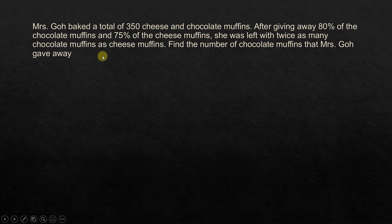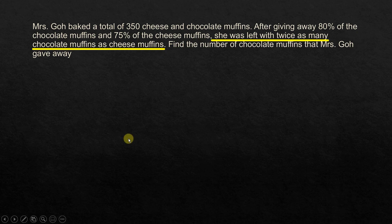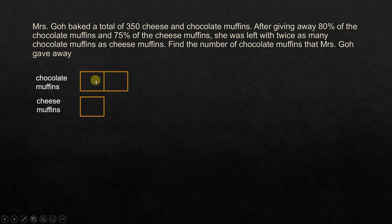She was left with twice as many chocolate muffins as cheese muffins. Whenever we have a 'more than' or 'less than twice' relationship, the quantity that comes after will be our reference. So let's start with cheese muffins. Let's assume that one unit is the amount of cheese muffins left. In that case, chocolate muffins would have two units, because that is twice as many as the cheese muffins.